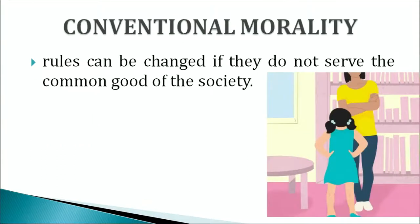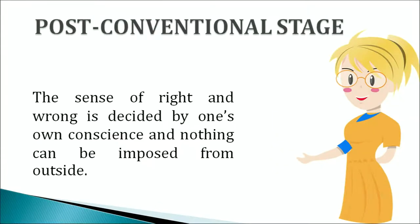At the level of conventional morality, children tend to believe that rules can be changed if they do not serve the common good of society. In the post-conventional stage of moral development, the sense of right and wrong is decided by one's own conscience and nothing can be imposed from outside. One may keep certain universals — like the value for life — at the highest order of values, and may even break a law for the same.